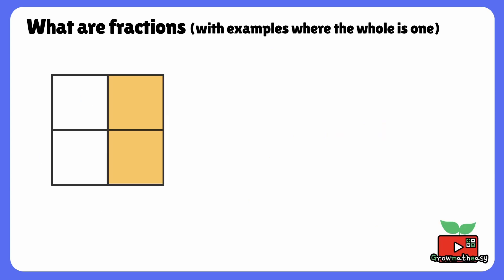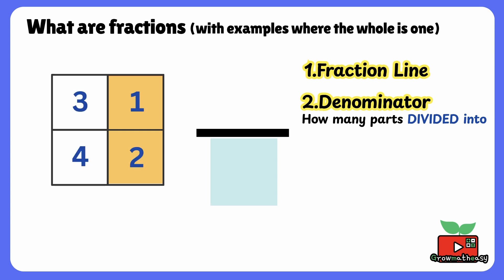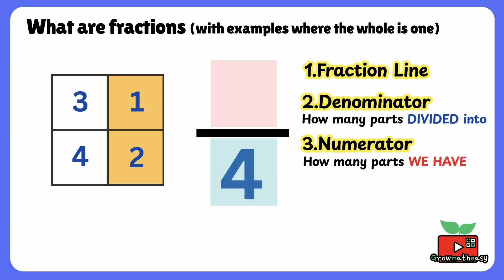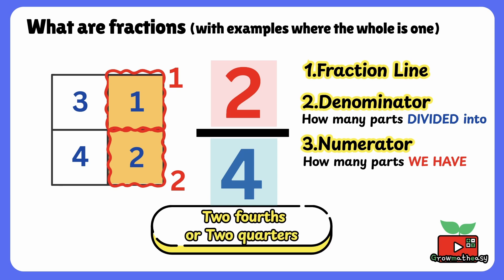Let's see some more. How much of the shape is shaded orange? The orange part is smaller than the whole, so we can use a fraction to show it. First, we draw a fraction line. The bottom number, called the denominator, tells us how many equal parts the shape is divided into. Let's count: 1, 2, 3, 4. The shape is divided into 4 equal parts, so we write 4 at the bottom. Next, we write the top number, called the numerator, which tells us how many parts are orange. Two parts are shaded orange, so we write 2 on top. So 2 over 4, or 2 fourths, or 2 quarters of the shape is orange.